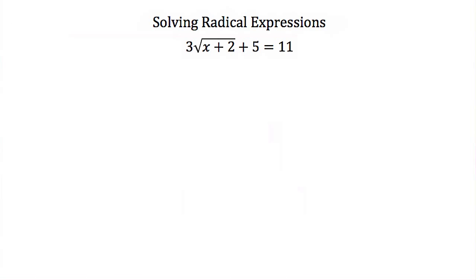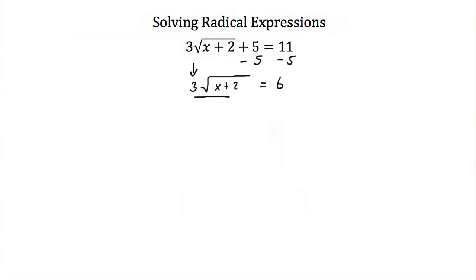Now let's look at another example. Here we have 3 times the square root of x plus 2, plus 5, equals 11. Our x is underneath the square root sign, so we need to get this square root term alone. Our first step is subtracting 5 from both sides, giving 3 times the square root of x plus 2 equals 6. Then we divide both sides by 3, leaving the square root of x plus 2 is equal to 2.